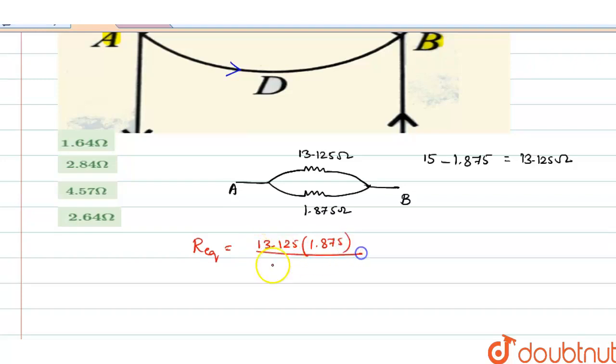So that is (13.125 × 1.875) / (13.125 + 1.875). When you simplify it, you get R_eq as 1.64 ohms. Now let's see the options. The correct option is option A, which has the right answer.